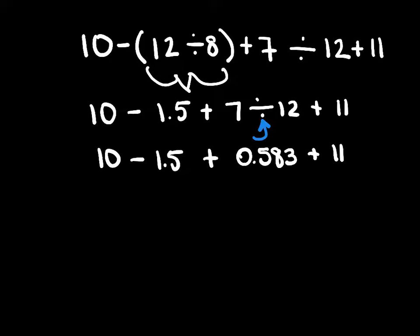So we're simply going to go across from left to right. 10 minus 1.5 is 8.5 plus 0.583 is 9.083 plus 11 gives us 20.083.